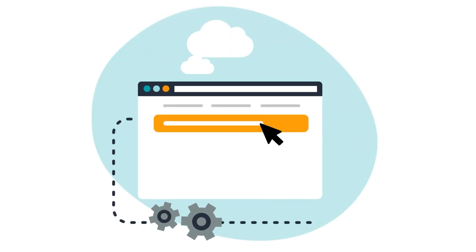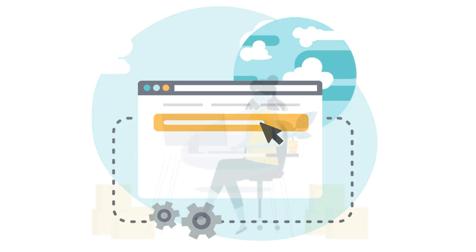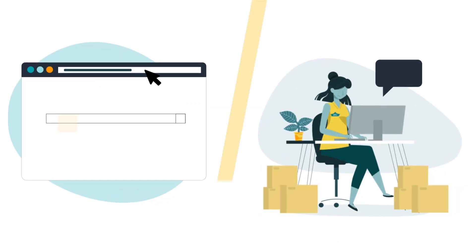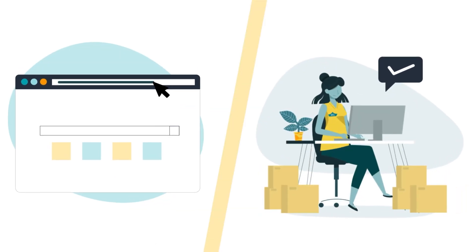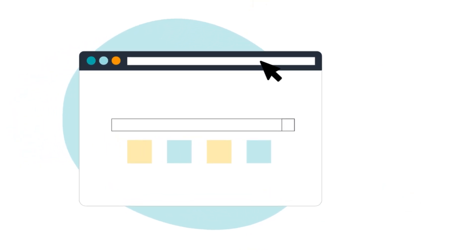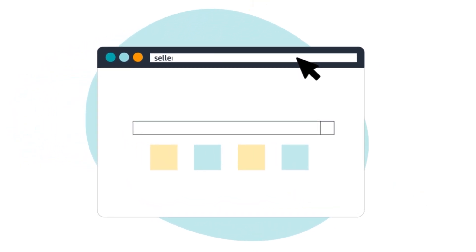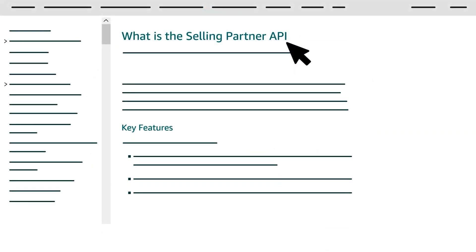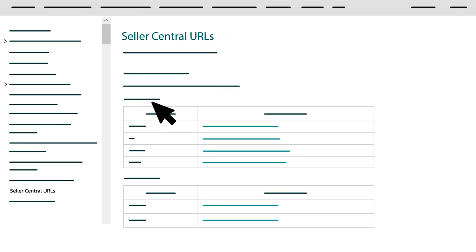To construct an OAuth Authorization URI for a public seller application, start by getting the Seller Central URL for the store where you want the seller to authorize your application — for example, sellercentral.amazon.com. You can see a full list of URLs on the Selling Partner API documentation website by selecting Seller Central URLs from the table of contents.